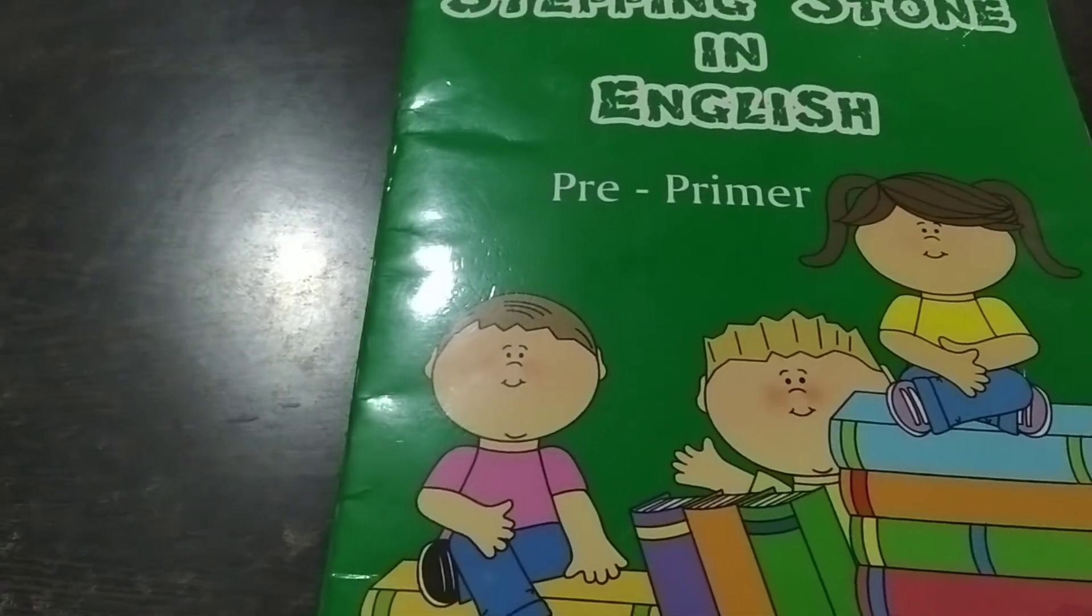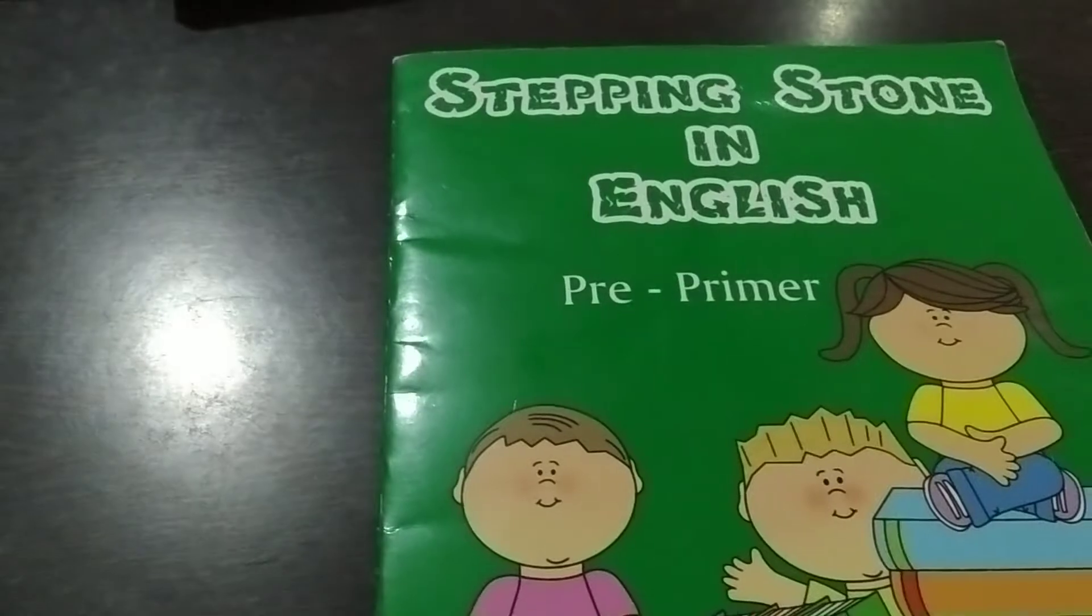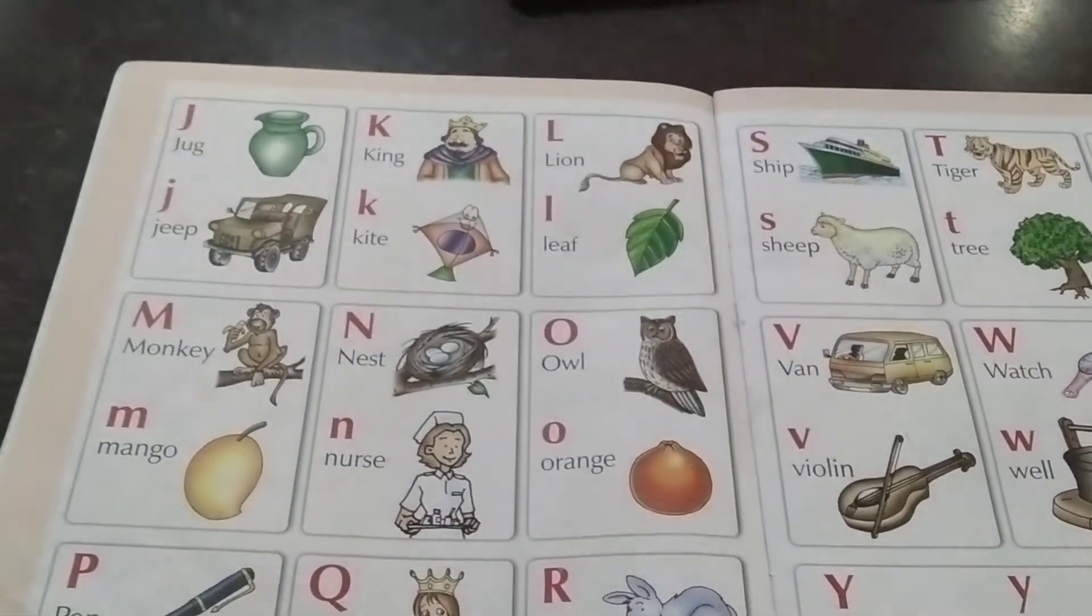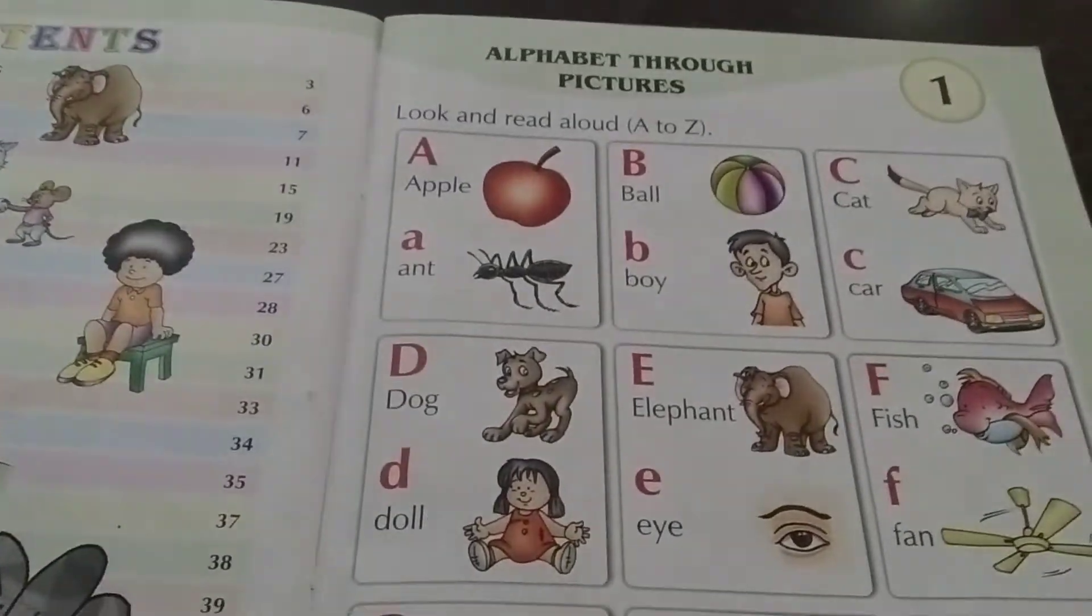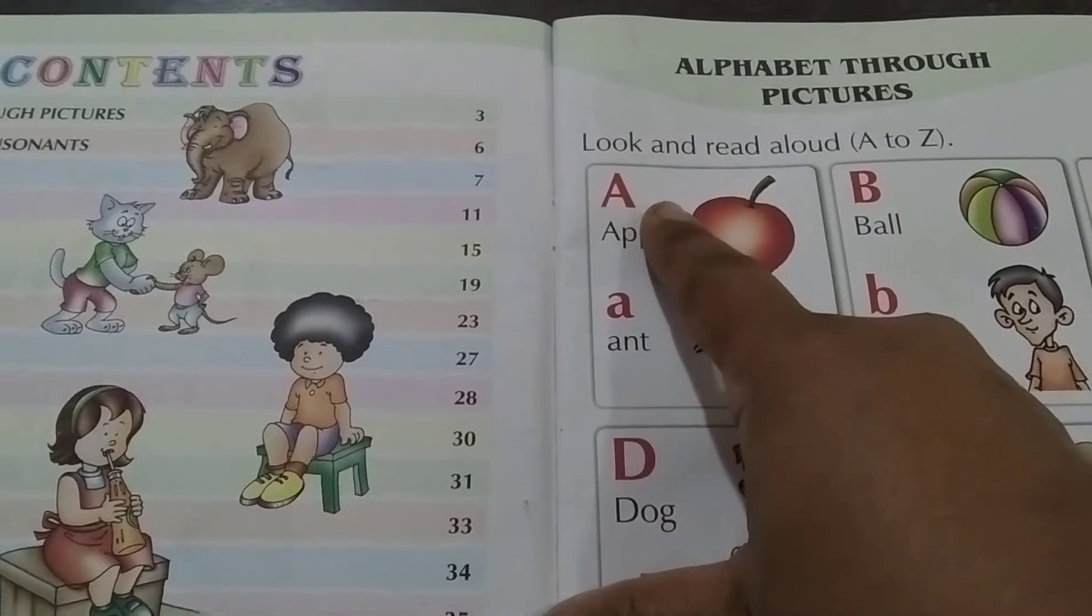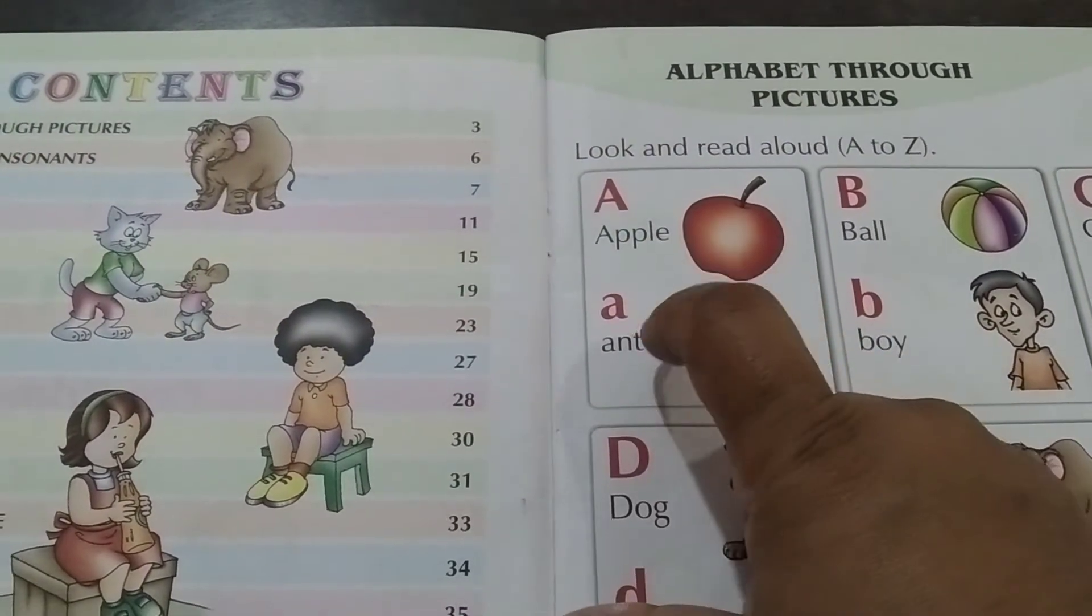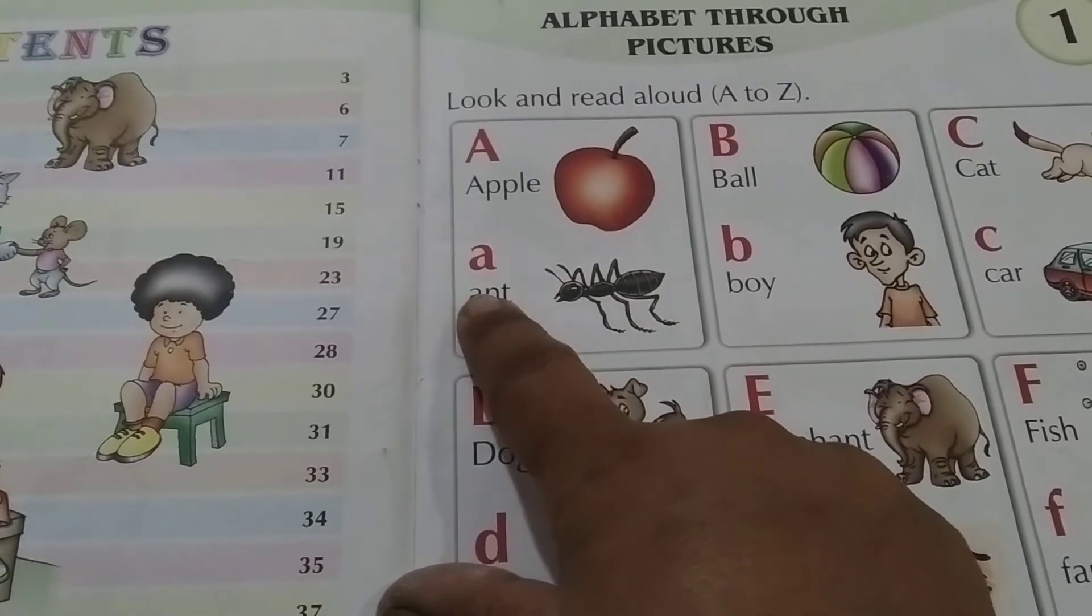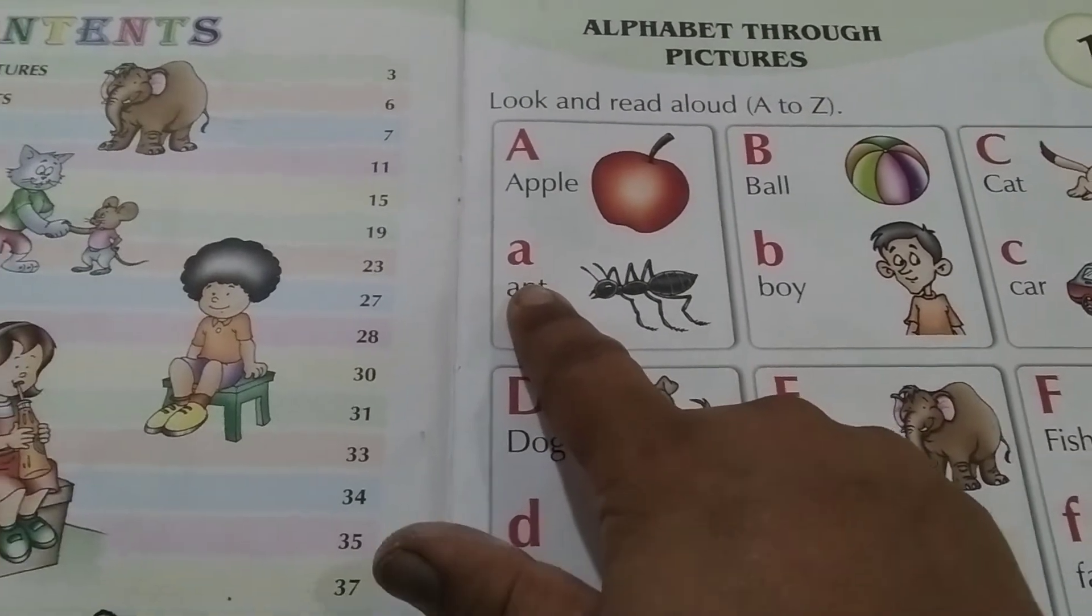See children? This is your textbook, Stepping Stone in English. Now you know which is the English reader, right? So open page number 3. As I have taught you, there are two - one is capital letter A, then small letter A. So we are revising small letters A to F.